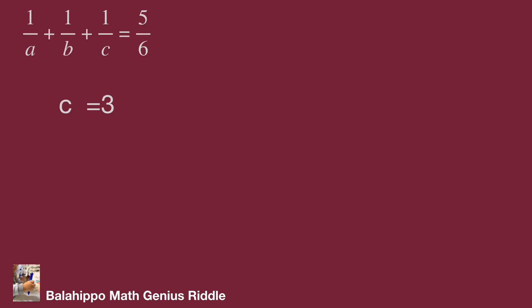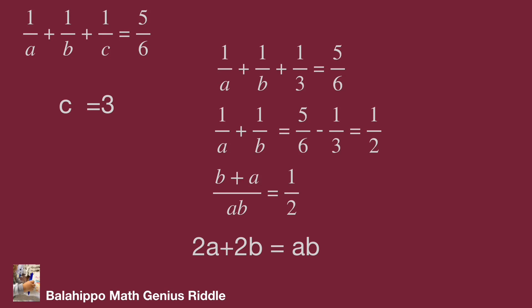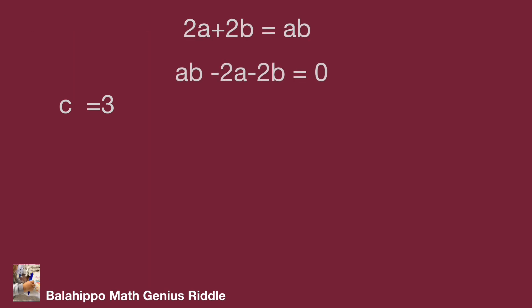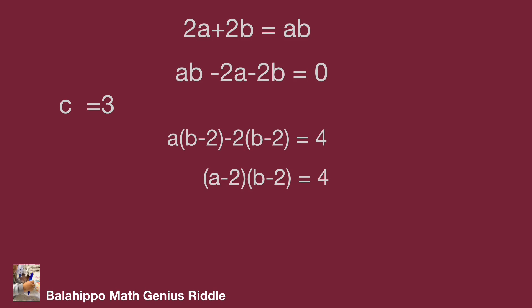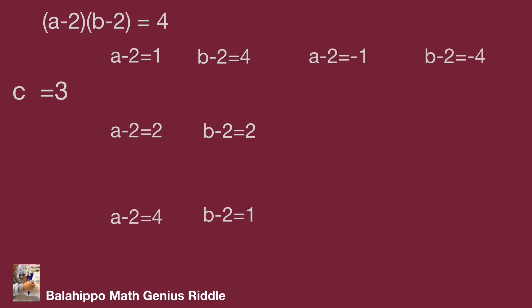When C equals 3, we get 1 over A plus 1 over B equal to 1 over 2. Then B plus A over AB equals 1 over 2, giving 2A plus 2B equals AB. So AB minus 2A minus 2B equals 0. Following the same algebraic operation to generate the quantity B minus 2 factor, we get the quantity A minus 2 multiplied by the quantity B minus 2 equal to 4. The factor pairs are: negative 1 times negative 4, negative 2 times negative 2, and negative 4 times negative 1.